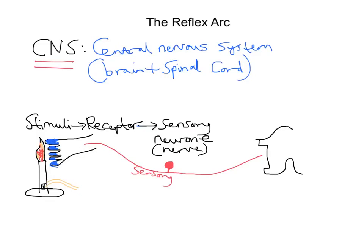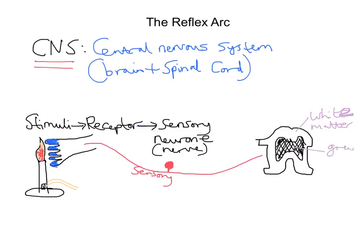I'm just going to draw a very rough sketch of the spinal cord. What we have in our spinal cord — this outer part is what we call white matter, and this darker central region is called grey matter. And what you see is this sensory neuron comes to the grey matter, and there it synapses. A synapse is a sort of connection between two nerves — it's a gap between two nerves that neurotransmitter passes across. It synapses with what's called a relay nerve.